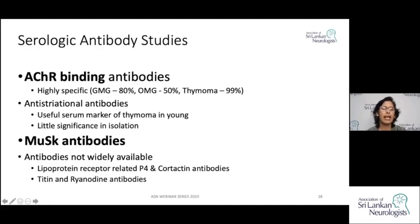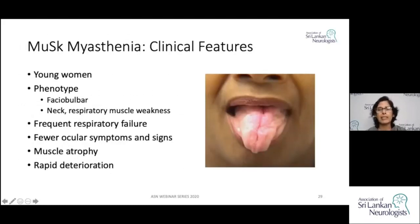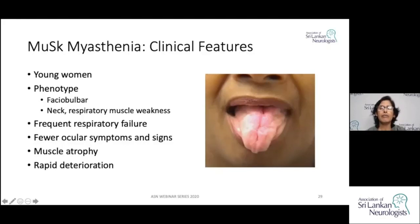In seronegative patients, MuSK antibodies should be checked. MuSK myasthenia has atypical features — patients are typically young women with predominantly faciobulbar, neck, or respiratory muscle weakness and may have wasting, potentially confusing with motor neurone disease. There is rapid deterioration with frequent respiratory failure, fewer ocular symptoms and signs, and possible muscle atrophy. LRP4 and agrin antibodies are also available but not widely accessible.